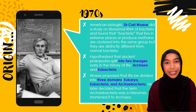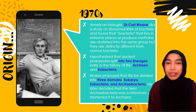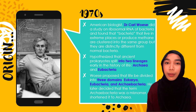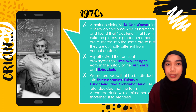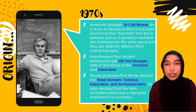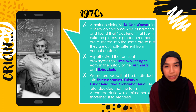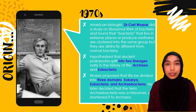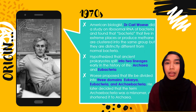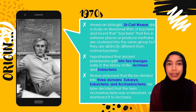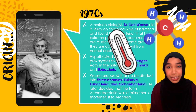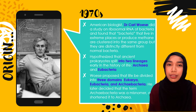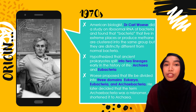Now that we know what Archaea is, let's talk about who first discovered it, how and when. Back in the late 1970s, an American biologist, Dr. Carl Woese, along with his colleagues at the University of Illinois, did research on the relationship between prokaryotes using rRNA sequences, and they found two very distinct groups. The bacteria that lived in high temperatures, or the ones that could produce methane, were discovered to be clustered together as a group, well away from the usual bacteria and eukaryotes.